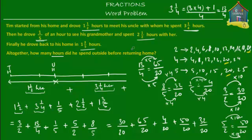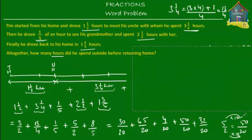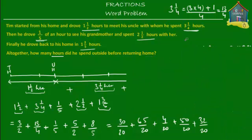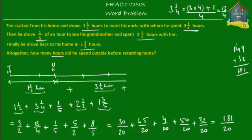We have converted all unlike fractions to like fractions so they all have a common denominator. Now it's easy to add them. The common denominator is twenty, and we add the numerators: thirty plus sixty-five is ninety-five, plus four is ninety-nine, plus fifty is one hundred and forty-nine, plus thirty-two is one hundred and eighty-one. So we have one hundred and eighty-one over twenty.